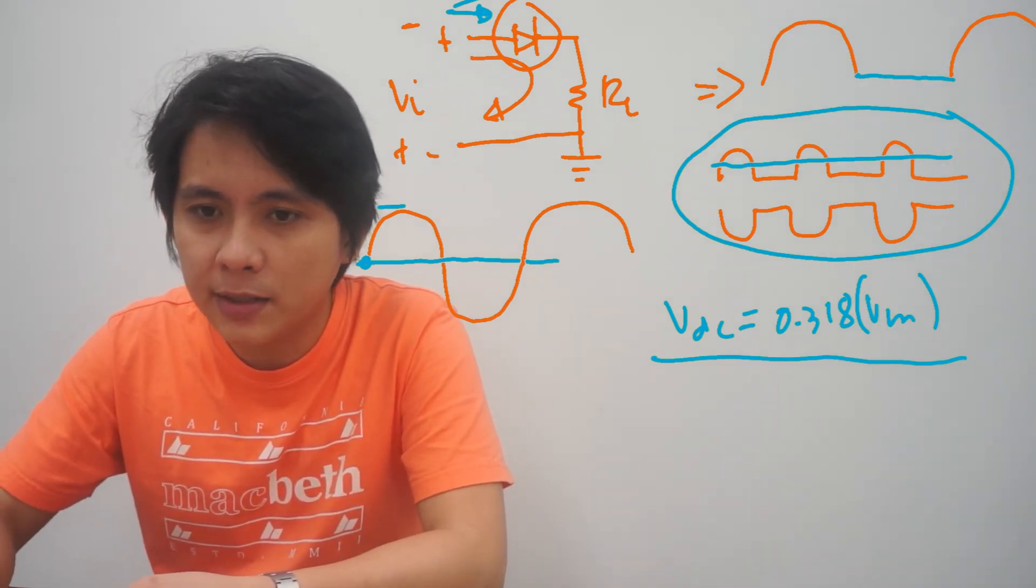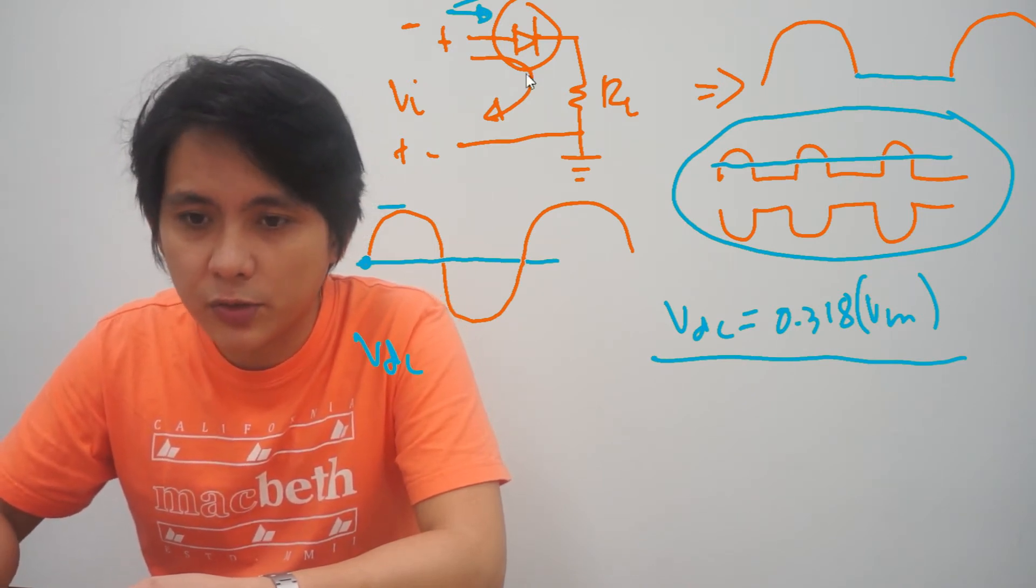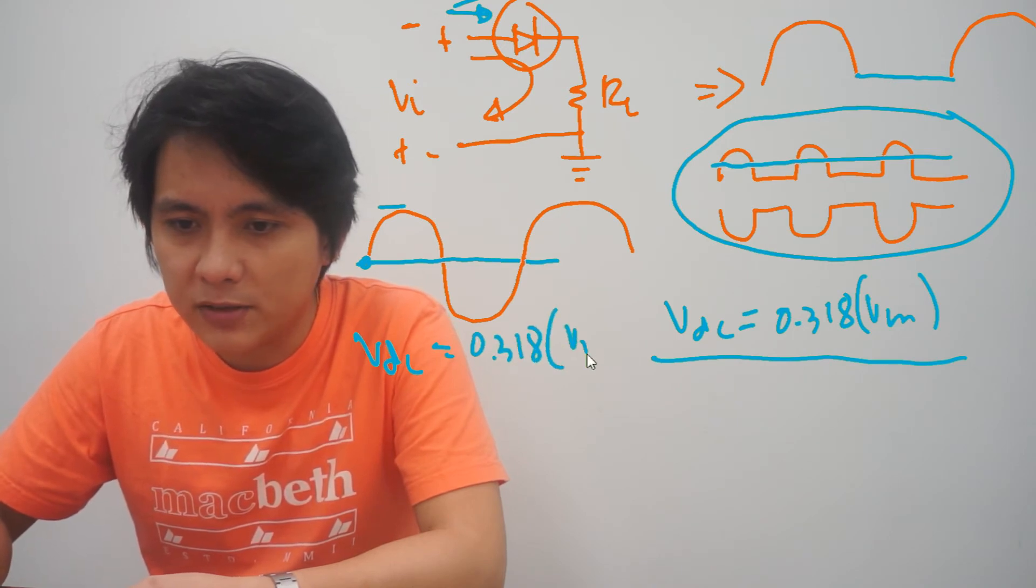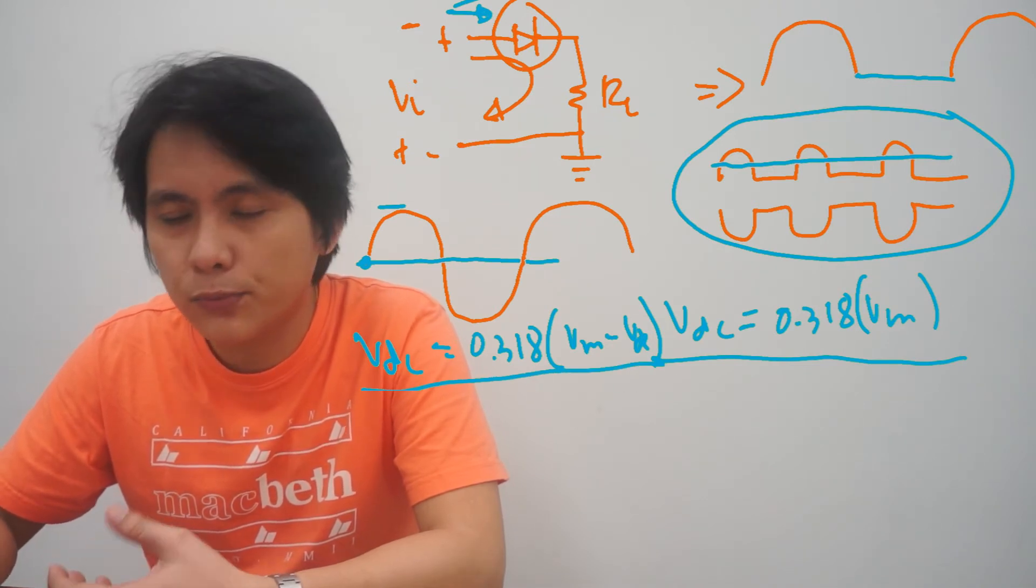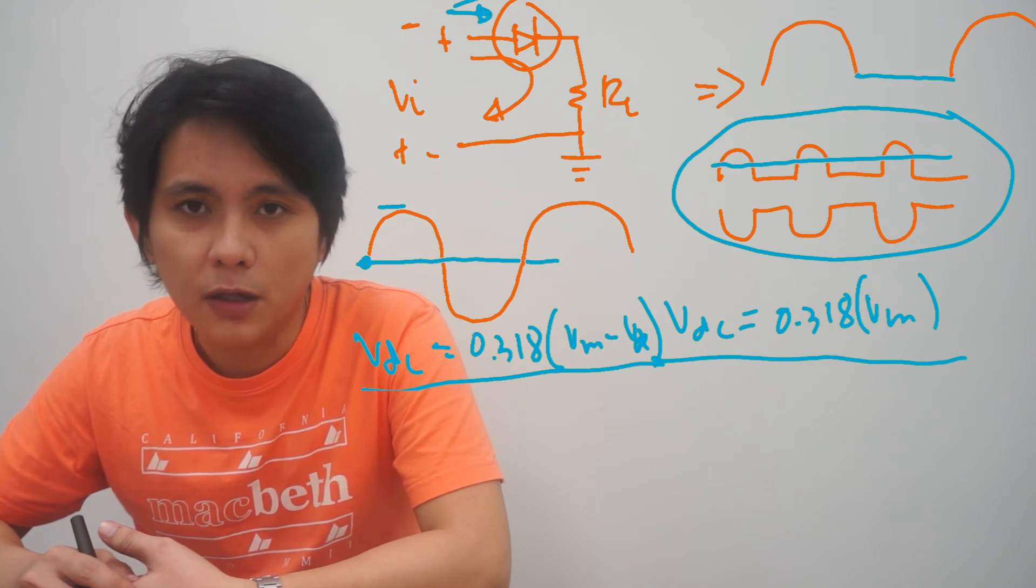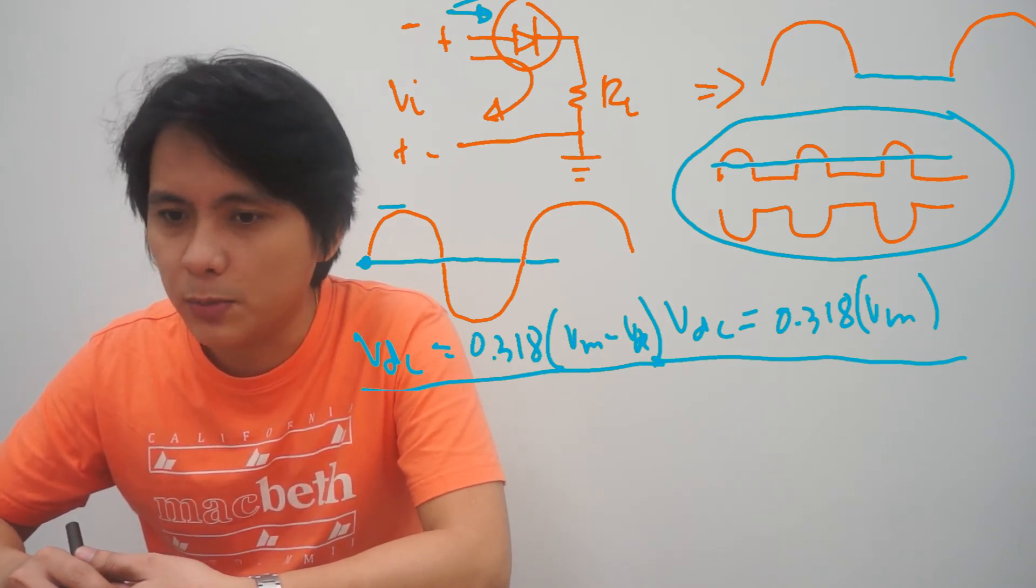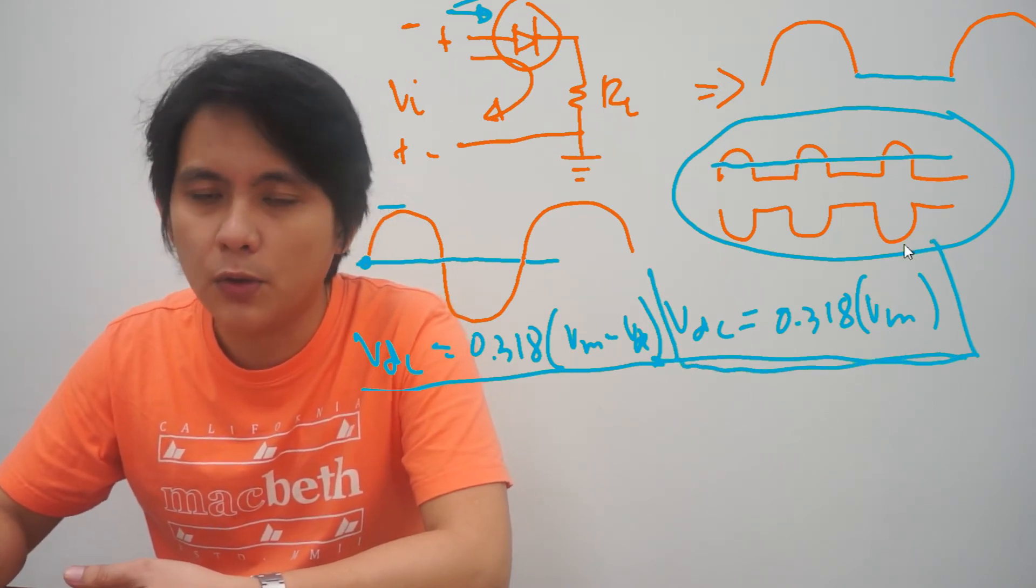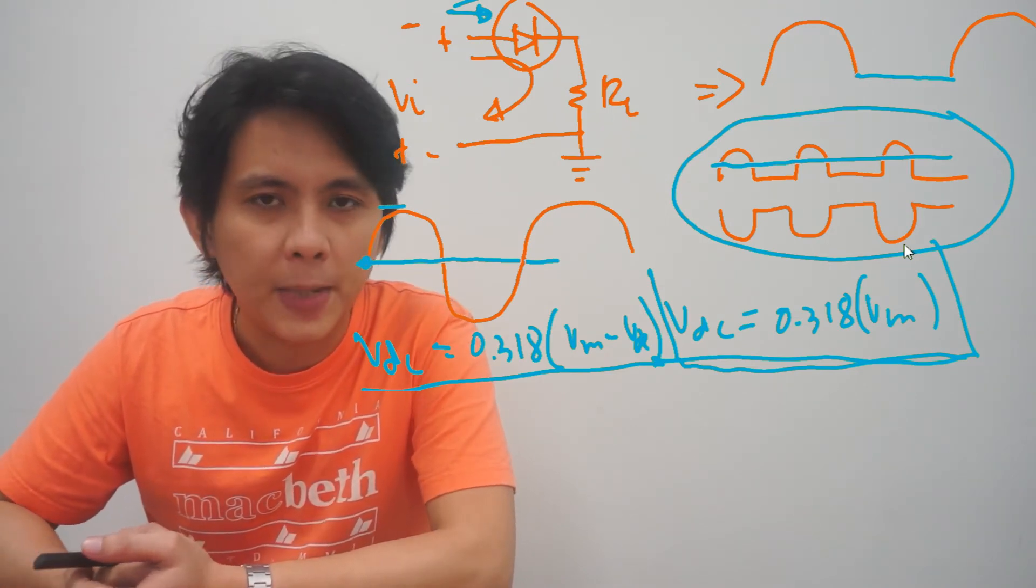We can subtract the threshold voltage from the V max: V max minus V th. We can also use this, but in common applications, the V th is very small that its value is negligible. We can just use this approximate equation: V DC equals 0.318 V max.